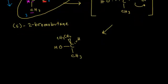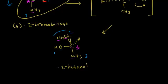Let's name our product: still four carbons, with the OH group on carbon 2, so it's 2-butanol. What is the absolute configuration? Oxygen gets the highest priority, then ethyl, then methyl, then hydrogen — which we ignore. Going 1→2→3 is clockwise, so that's R. We get R-2-butanol as our product. We started with S-2-bromobutane and ended with R-2-butanol — only inversion of configuration, and this is the only product via an SN2 mechanism.